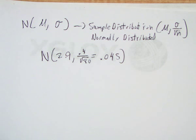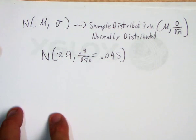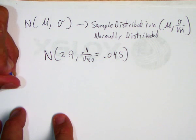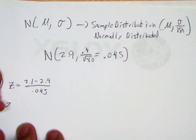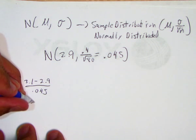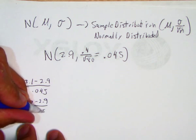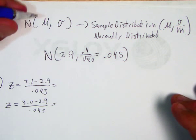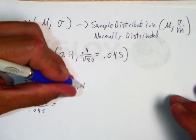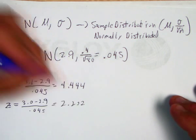Now we've got to estimate the probability that the mean of all these 80 cars is between 3.0 and 3.1. Let's do a z-score for 3.1 and a z-score for 3.0. If we do those two z-scores, you get 4.444 and 2.222.